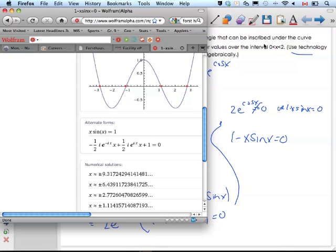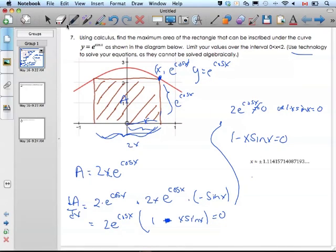I know I have to be between 0 and 2π, so I need this one there. So x is going to be plus or minus 1.114.